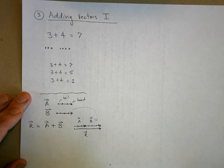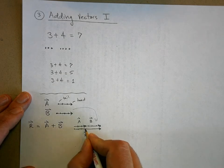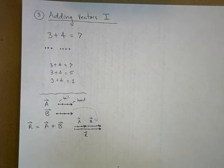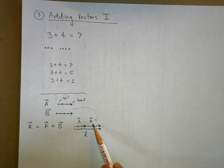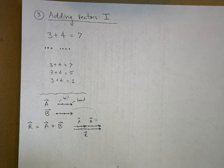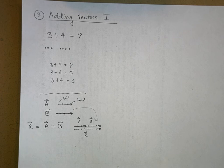The result is called the resultant vector R. It starts where A starts and ends where B ends. The magnitude of R is one, two, three, four, five, six, seven — equal to seven. This works because vector A and vector B are pointing in the same direction, so you can simply add their magnitudes.